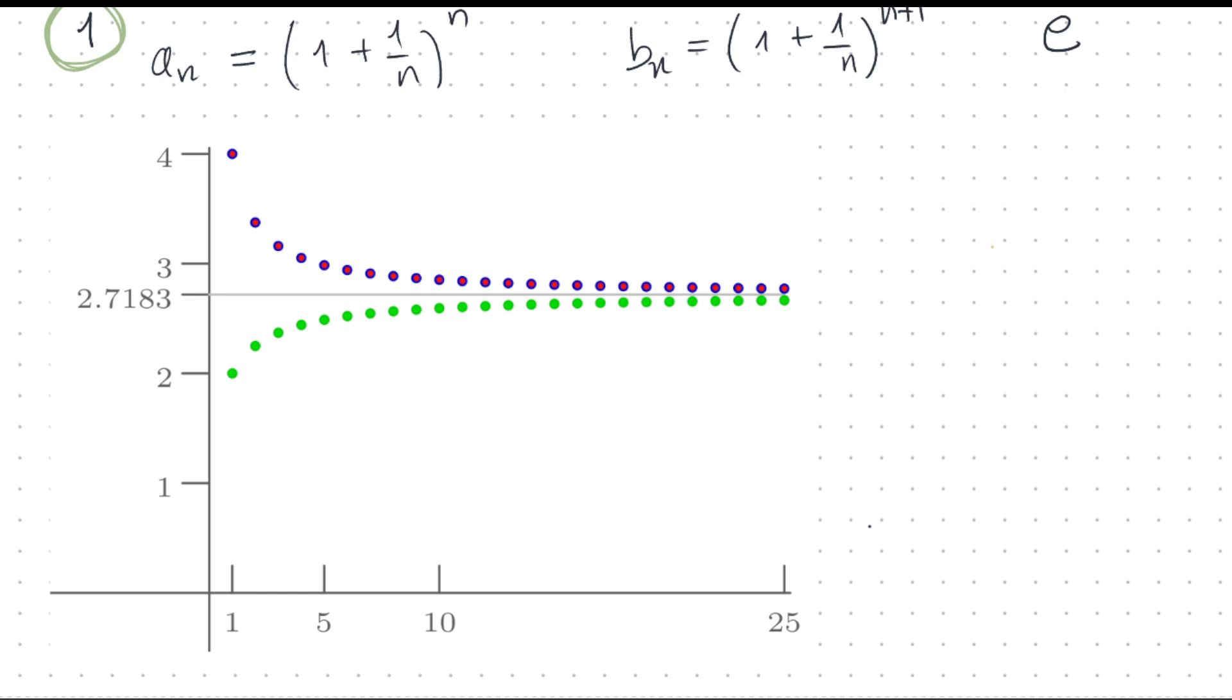Sequence a_n is here, the green dots. And you notice that a_n is increasing and it's monotone, monotone increasing and converging to e over here. And b_n is the other way around though. Very interesting. It's converging from above and it's also monotone. That's very interesting.